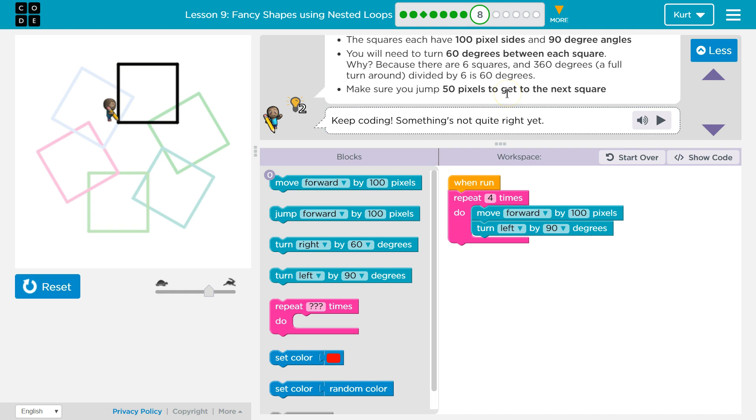And make sure you jump 50 pixels to get to the next square. All right. Let's try jumping 50 here, right? Because after we draw four sides, let's get to the next square. Jump 50. And I'm not sure if it's going to be left or right, but let's try moving. Well, wait a minute. This already says 60. Let's see if that looks okay.